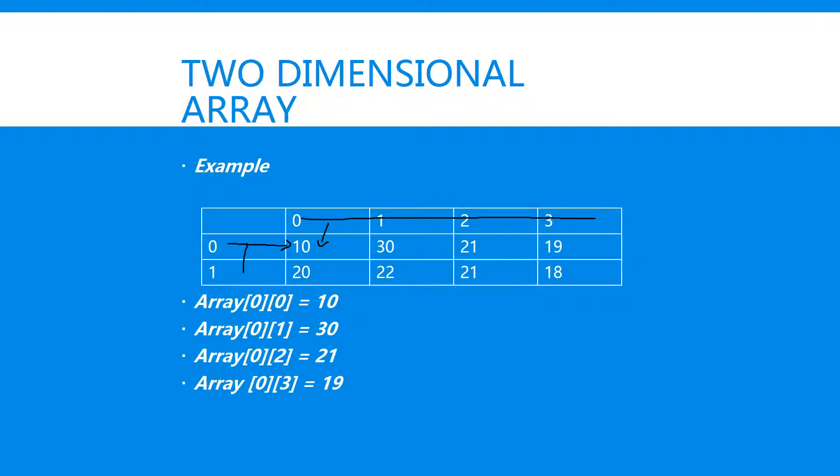[0][1] is thirty. Now if I wanted to get number 22, I would write array, and I would have [1], say let's go for 21, and then [2].